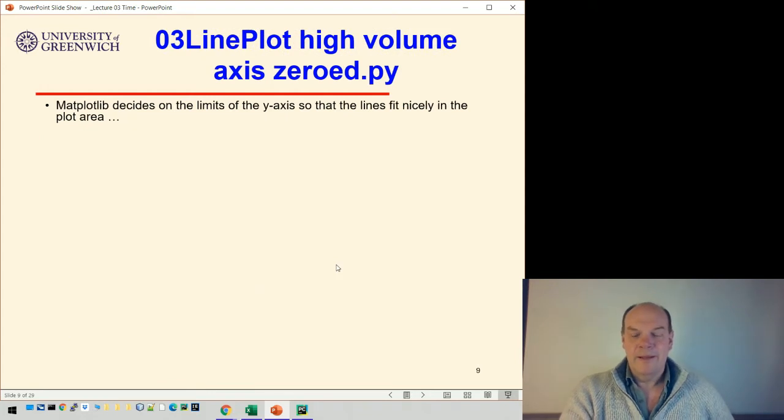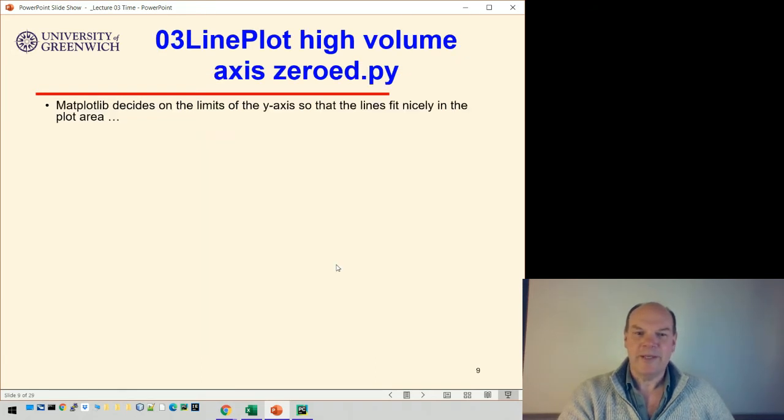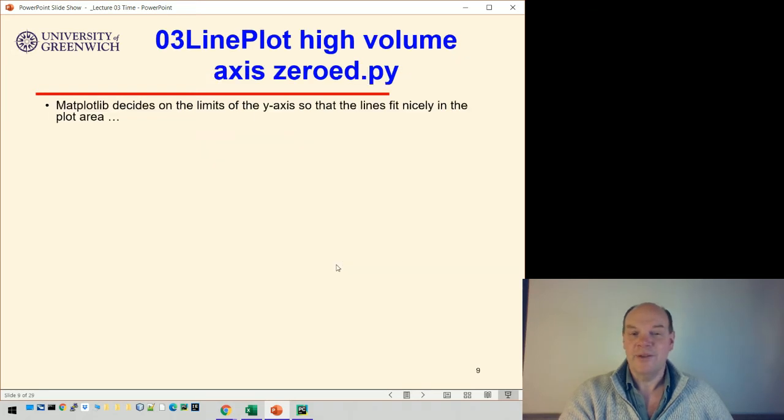The reason that happens is that Matplotlib is trying to fit everything nicely. So to show as much of the data as possible, Matplotlib tries to fit it all into the picture without too much white space. But that's very misleading. So it looks like L is doing not nearly as well as the others, but actually, that's not true.